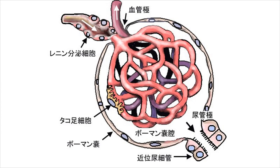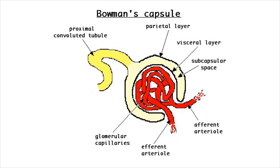The functional and structural unit of the kidney is the nephron. The nephron is made up of mainly two parts: a Malpighian capsule, which includes Bowman's capsule and renal glomerulus, and the renal tubule, which includes the proximal convoluted tubule, Henle's loop with descending and ascending limbs, distal convoluted tubule, and collecting tubule.